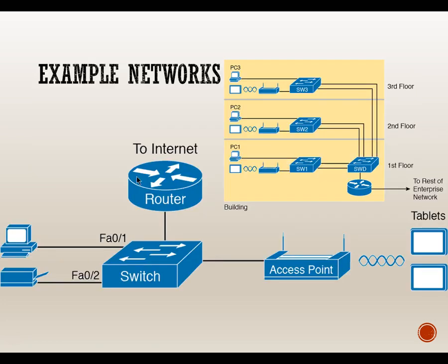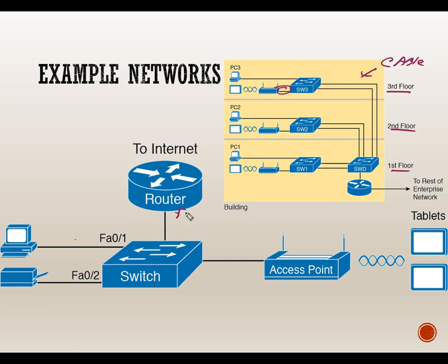Here we have examples of networks with different floors — first, second, third floor — and the question is what kind of cabling do we use. We're showing computers wired and wireless connected to a wireless access point, but at some point it has to be wired to the network. So wireless or not, eventually we're going to have to have a wire connecting down to the rest of the network.